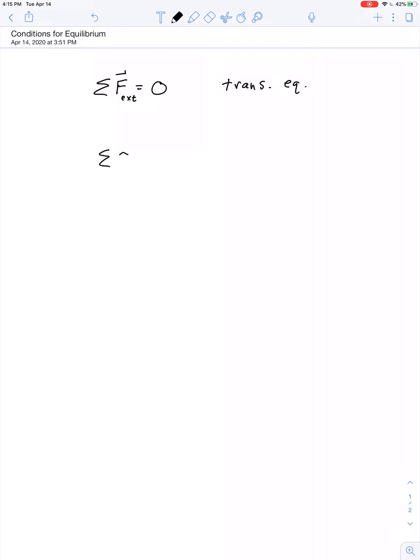In the same regard, when the vector sum of external torques on a system is equal to zero, that represents rotational equilibrium. So for an object to be in a complete state of equilibrium, it has to satisfy both of those conditions. So we'll say this is condition one for equilibrium, and the other statement is condition two for equilibrium.